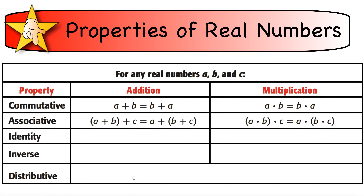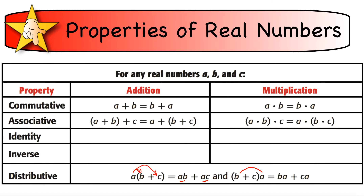The distributive property helps us get rid of parentheses. If we have something like A times the quantity B plus C, we distribute the A through the parentheses — it's A times B plus A times C. If it's on the right-hand side, you could move it over and get B times A plus C times A. We know that AB and BA mean the same thing, and AC and CA mean the same thing. So the distributive property lets you write something just as a sum.